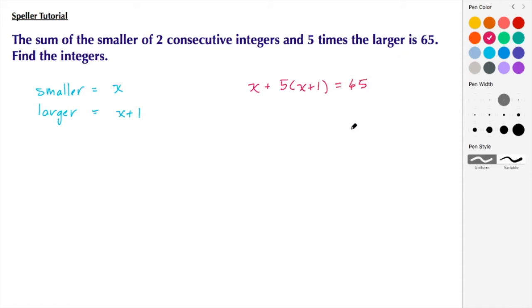So now we have an equation that we can simplify. We're going to begin by distributing this 5 to both of these terms. So here we have x plus 5x plus 5 is equal to 65, because we did 5 times x to get 5x and 5 times 1 to get 5. Now we're going to combine like terms. I have 1x here and 5x here, so this turns into 6x plus 5 equals 65.